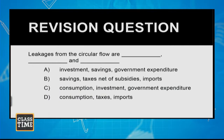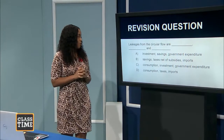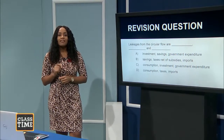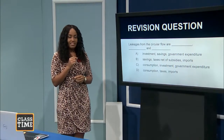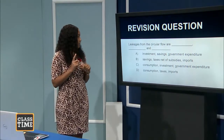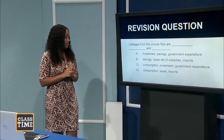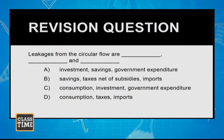Next question: leakages from the circular flow are which of the following? We already know savings is a leakage and investment is an injection, so we can eliminate any option that includes investment — that rules out options A and C. The correct answer is option B: savings, taxes net of subsidies, and imports are the leakages that remove money from the circular flow.